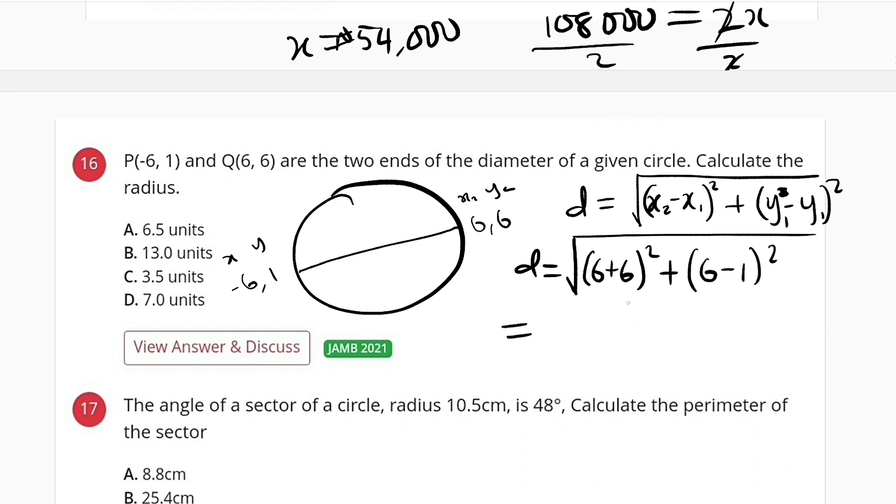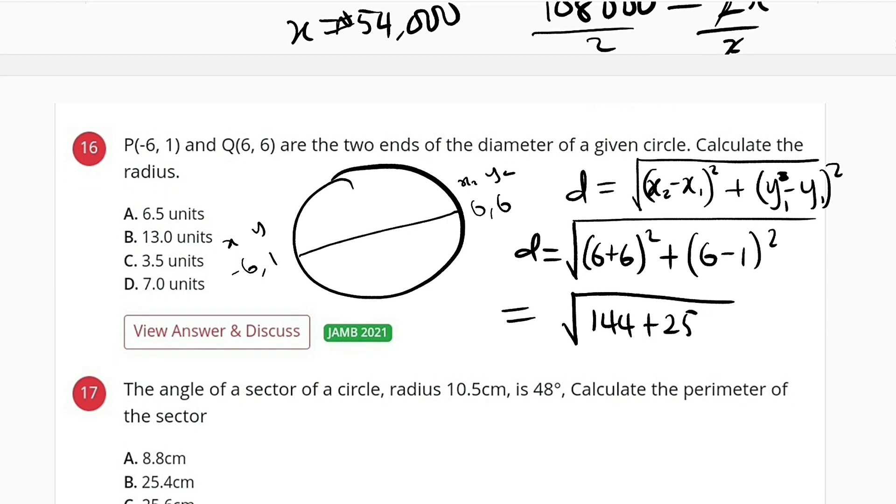This is equal to 6 plus 6, which is 12. 12 squared is 144. Plus, 6 minus 1 is 5, and 5 squared is 25. This is 169, square root of 169. And square root of 169 is 13.